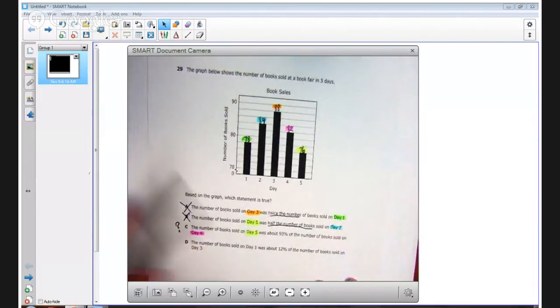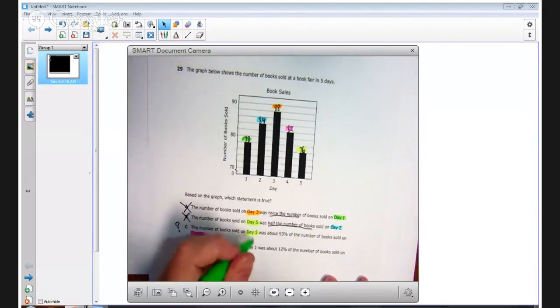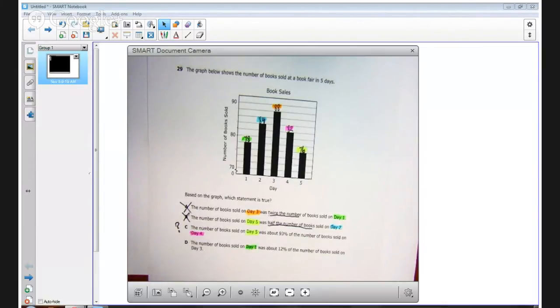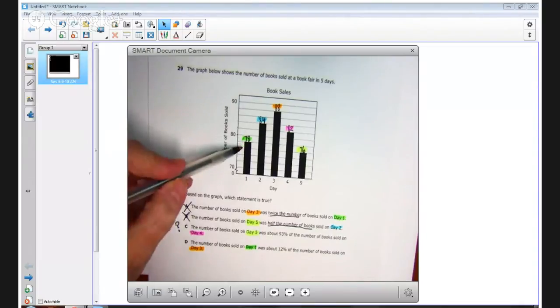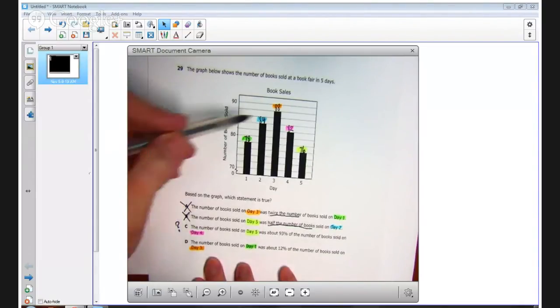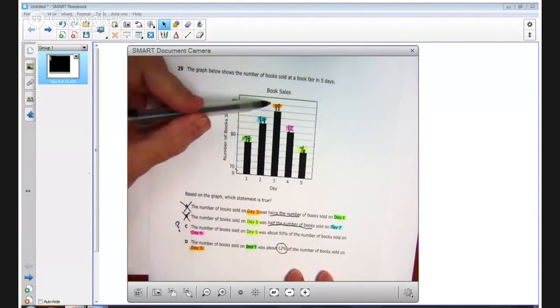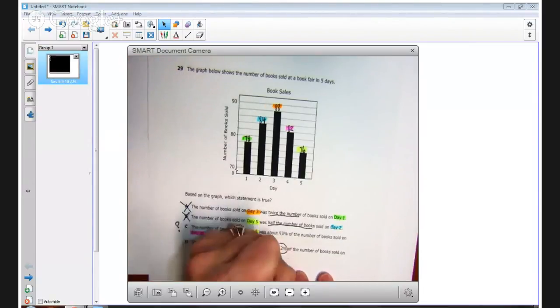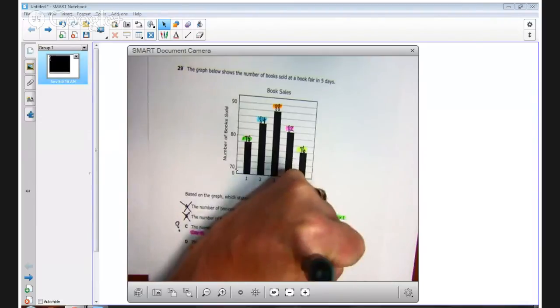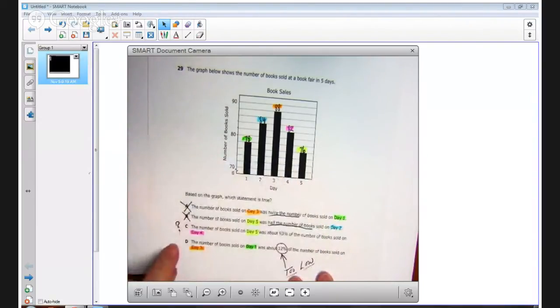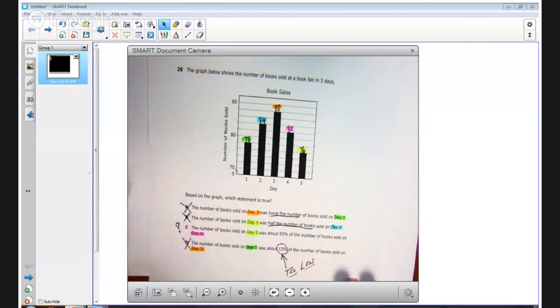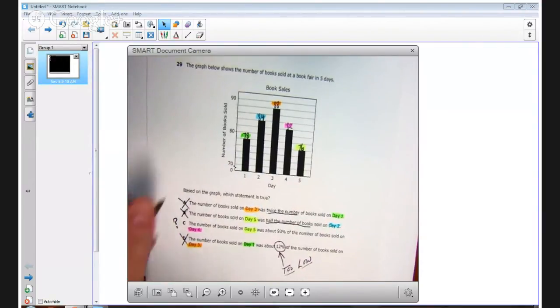Answer choice D says the number of books sold on day one, I have that one highlighted in green, so I'm going to use green again, was about 12% of the number of books sold on day three, and day three was 88. Well, day one had 78 books, and day three was 88 books. There's no way that's 12%, because it's way over half the number of books. 50% would be half, so 12% is entirely too low, and I'm going to go ahead and label too low for that 12%, meaning D is incorrect. So the only answer out of the four that is reasonable is C.